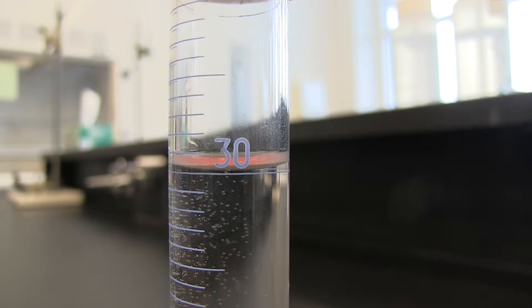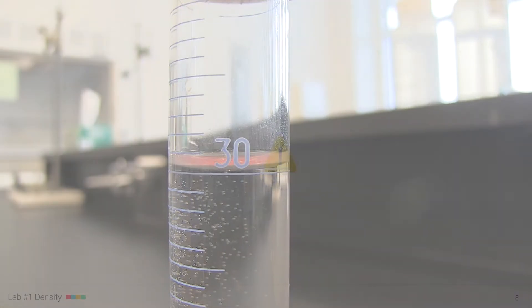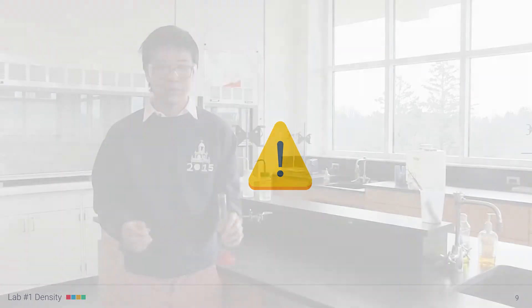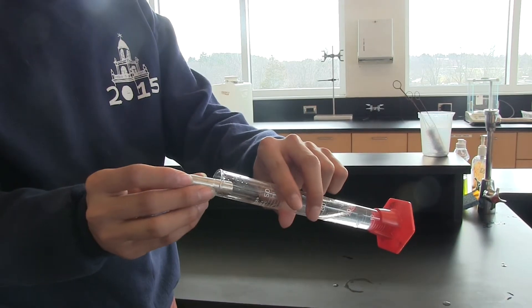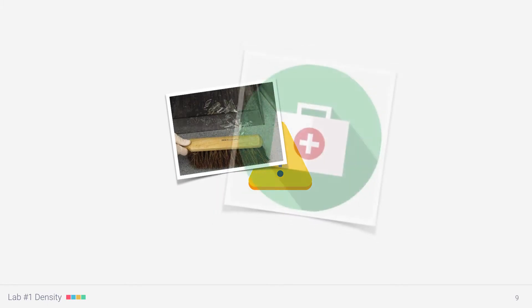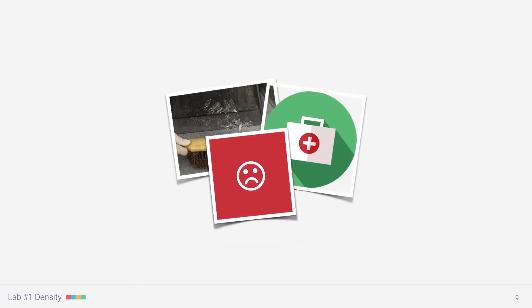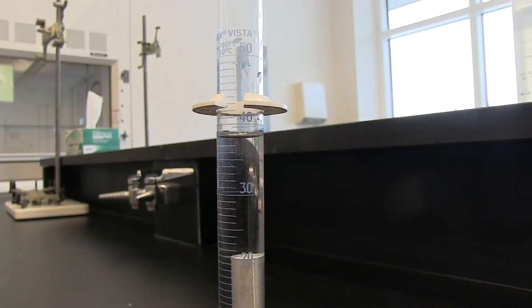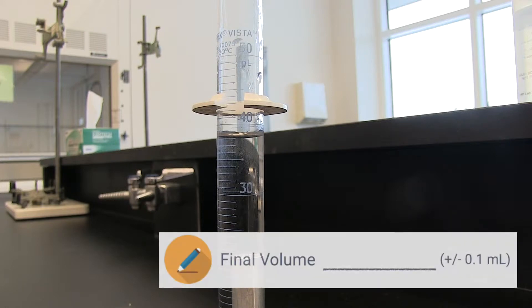Next, we need to add our solid to the cylinder. For this part, be careful. A ton of students have broken their cylinders by just dumping the solid in there. Instead, tilt the cylinder to the side and carefully let the solid slide down. Dealing with broken glassware is not fun. Now that our solid's in there, we can record our final volume. And remember, from the bottom of the meniscus.